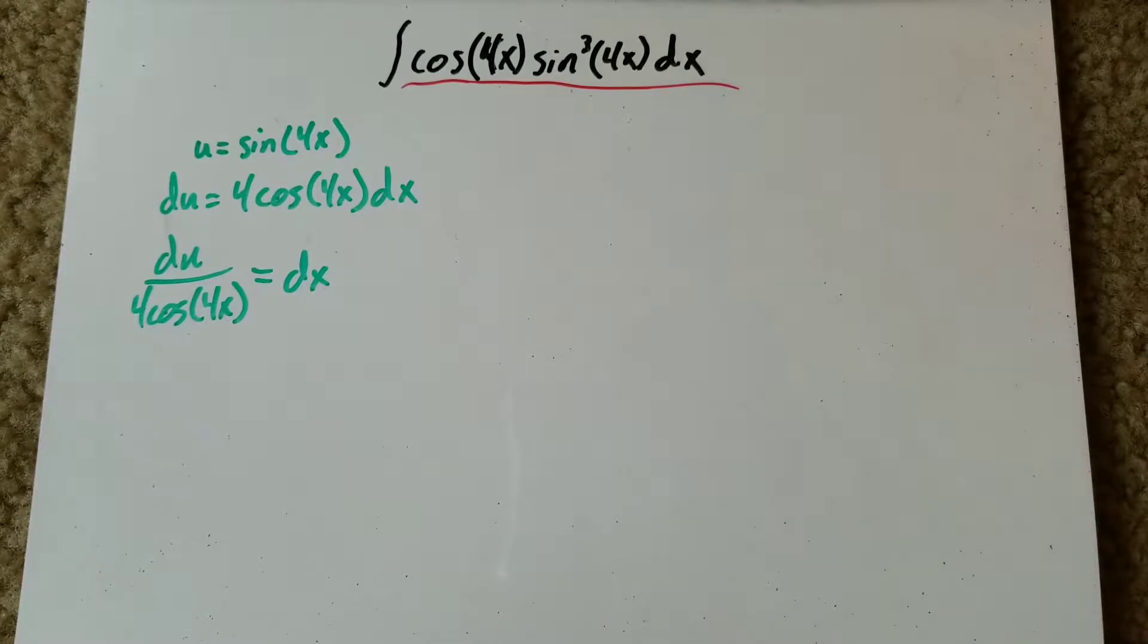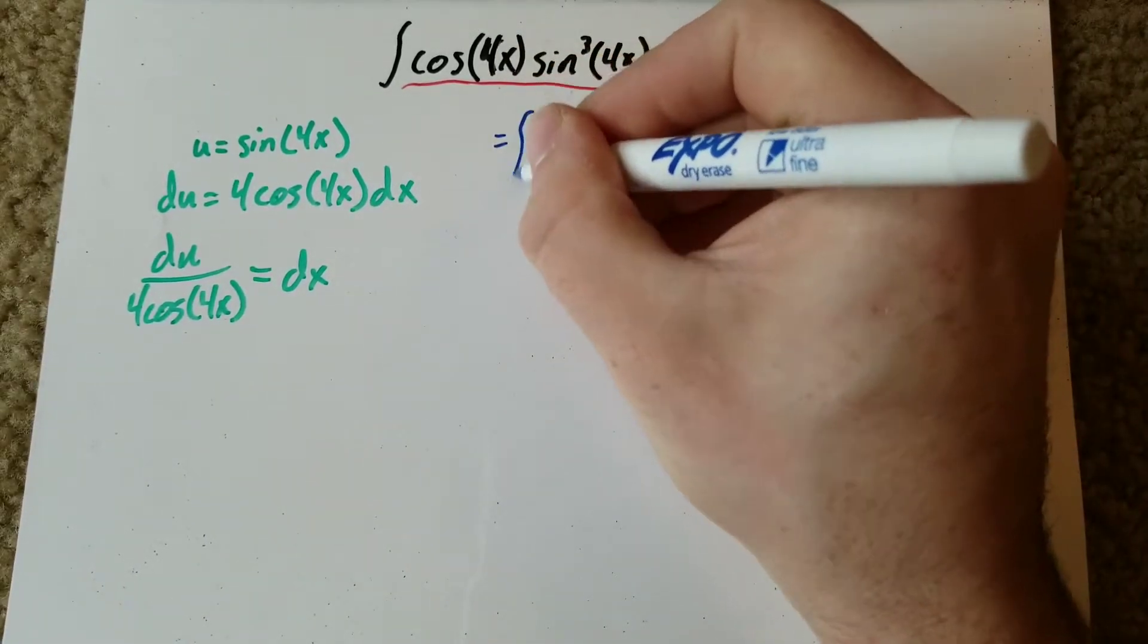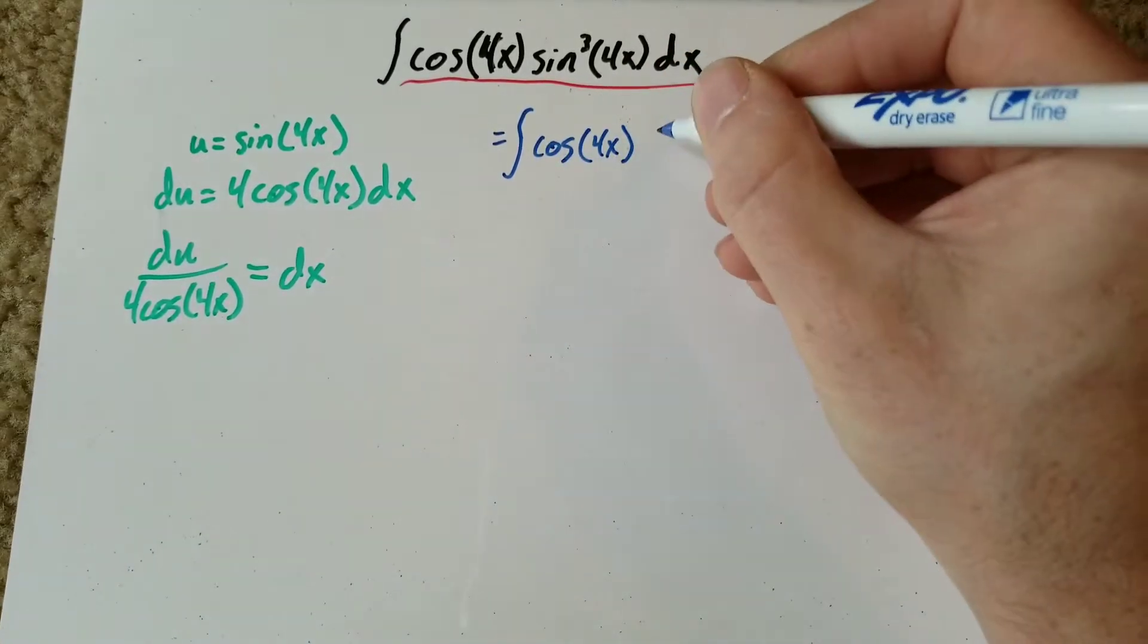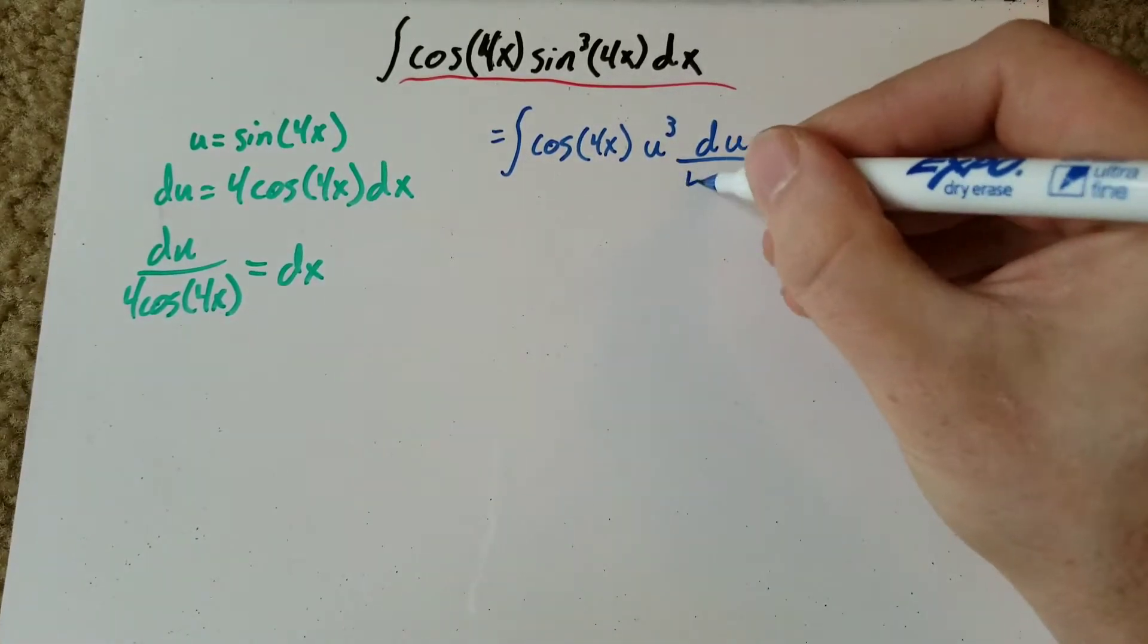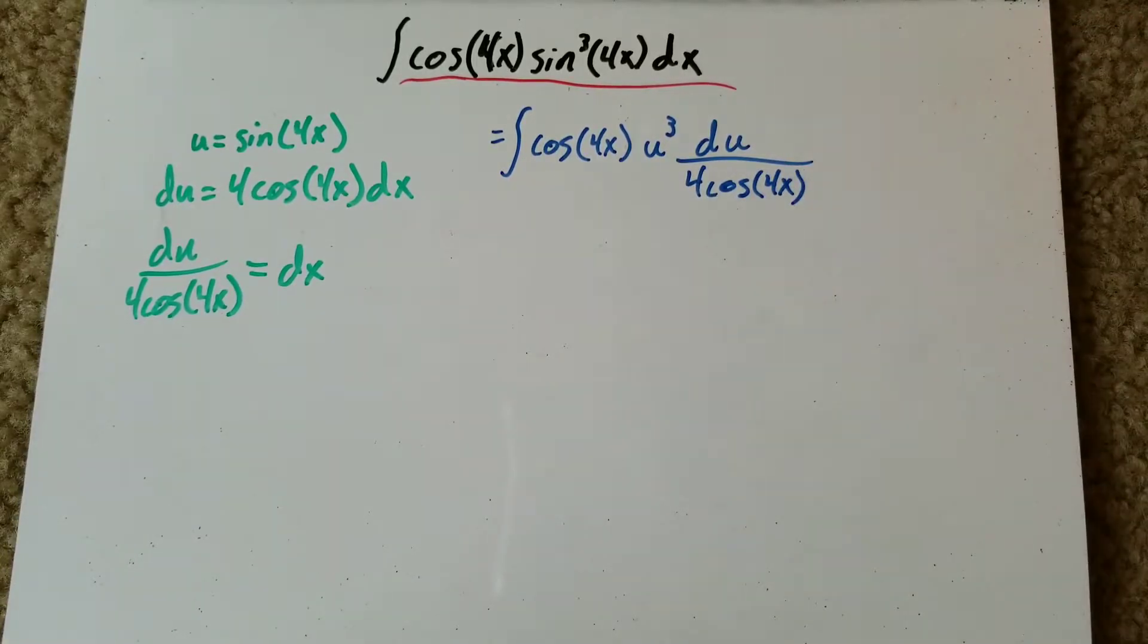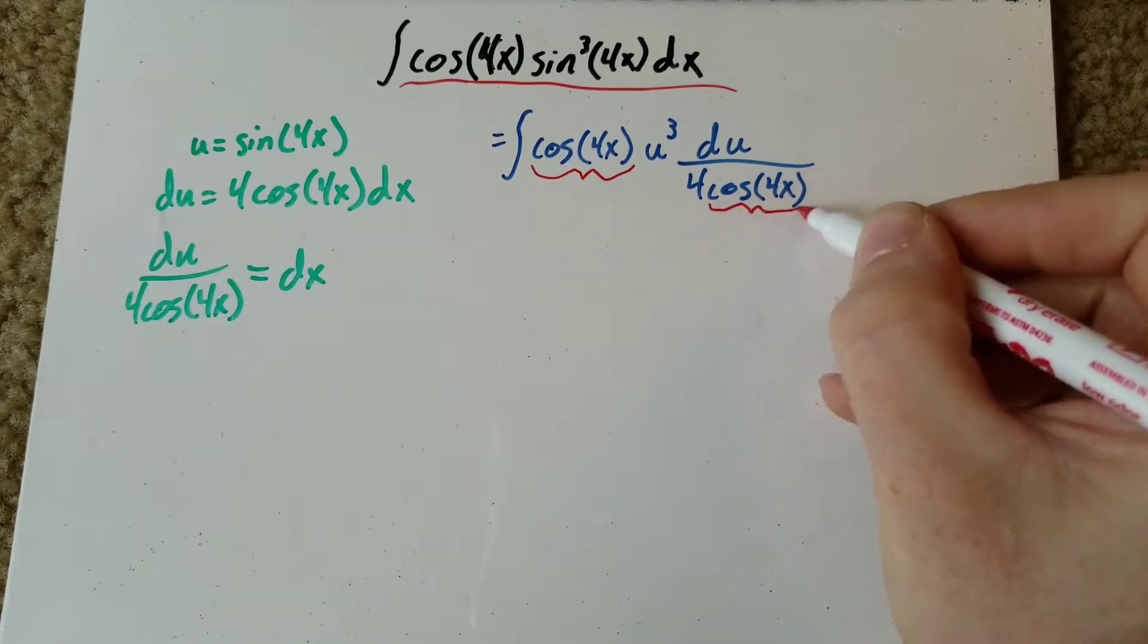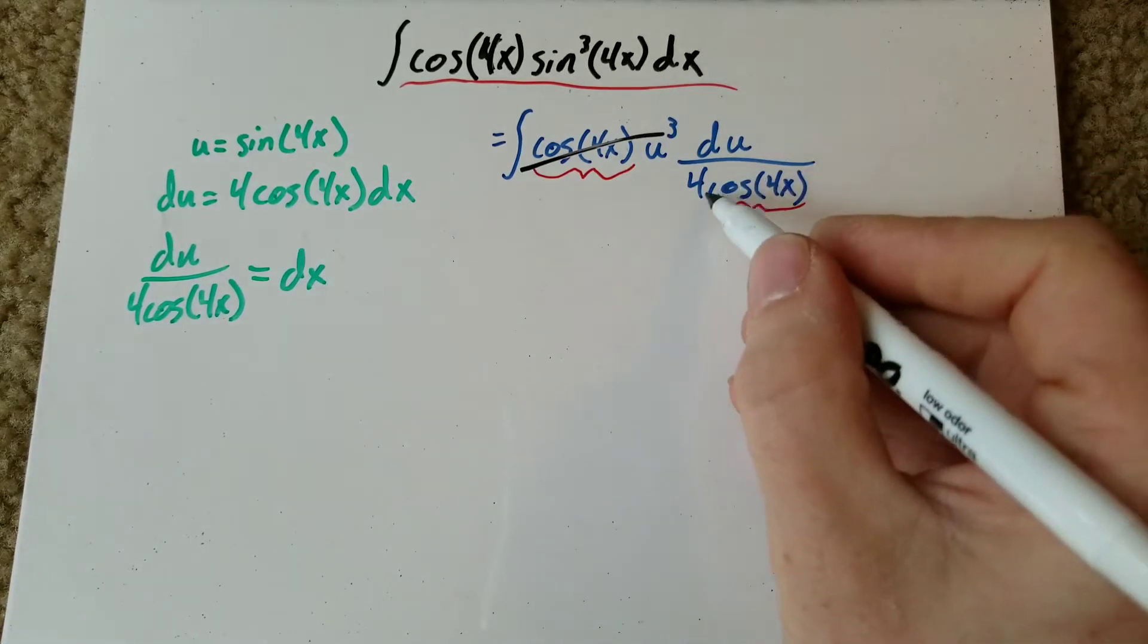So now that we've got that out of the way, we can go ahead and rewrite our integral and then solve it. So it now equals the integral of cosine 4x times u cubed du over 4 cosine of 4x. So as you can see, we chose the correct u because cosine of 4x and this cosine of 4x are both going to cancel out.